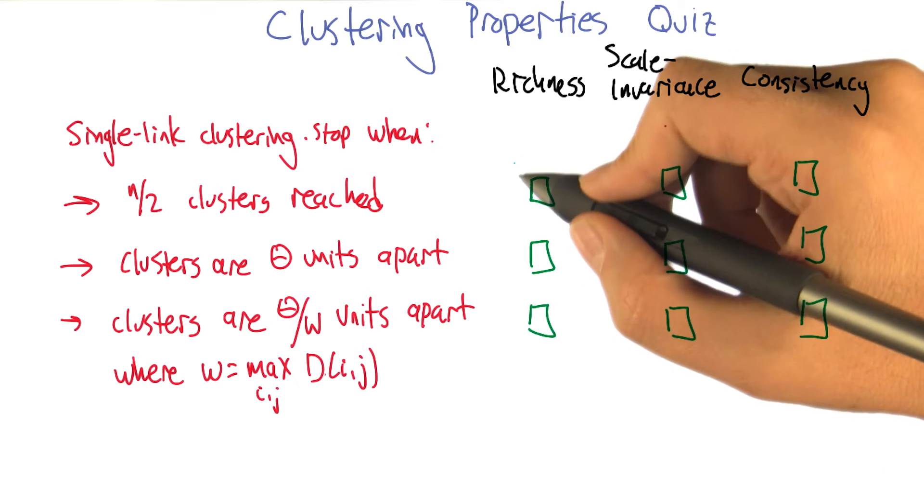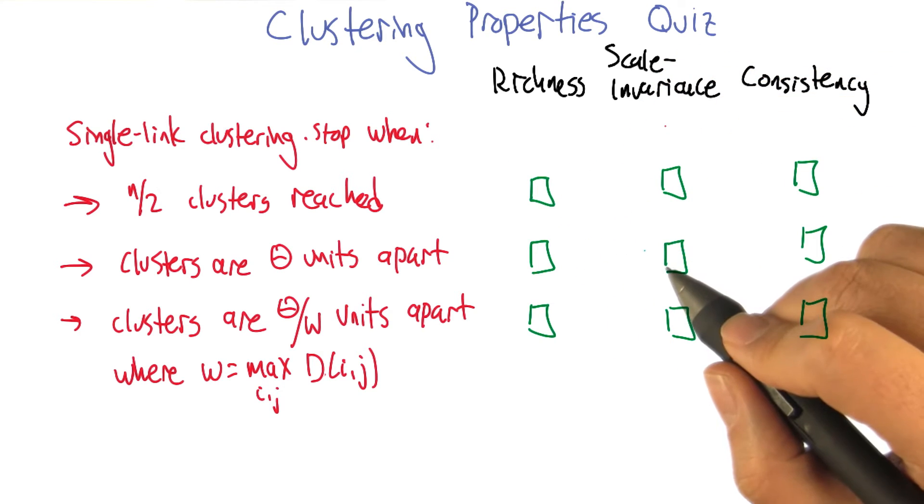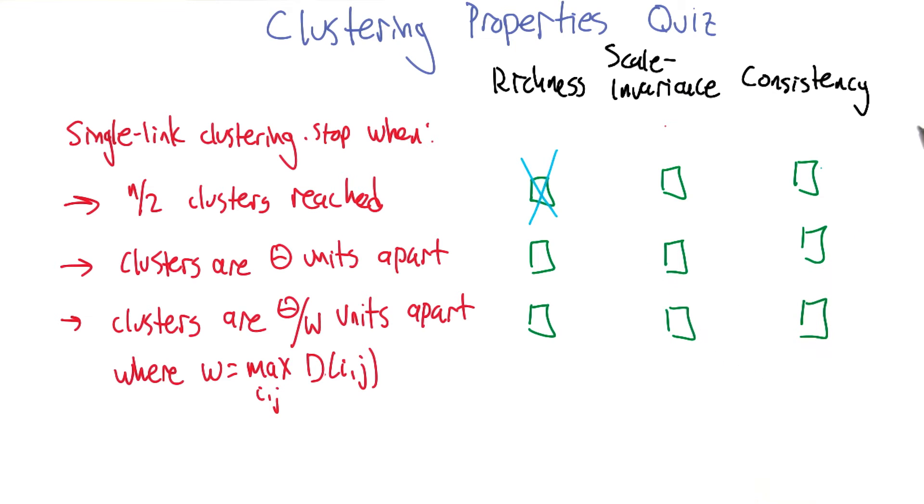Good point. Because richness would allow for one cluster, or it could have n clusters, or it could have n over three clusters, or it could have n over two clusters. But here, you forced it to always have n over two clusters, so it can't represent all possible clusters.